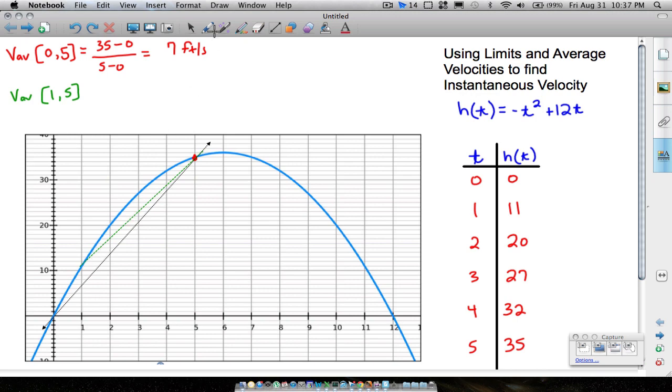This slope is not as steep. Well, let's find it. We're still going to do y2 minus y1 over x2 minus x1. Well, the y2 and the x2 are the same. But now we got a different y1 and x1. So the function's value at 1 is 11. So y2 minus y1 over x2 minus that x1.